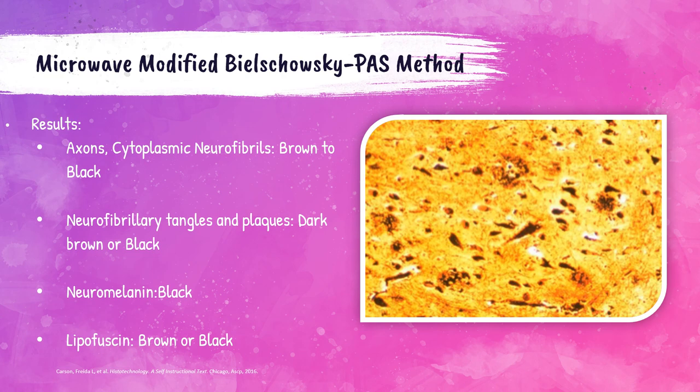A photo of cortex tissue from an Alzheimer's patient stained with this microwave procedure shows visible senile plaques as circular structures within the section.